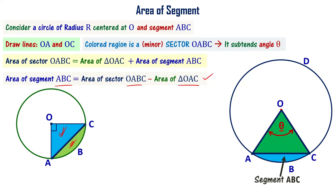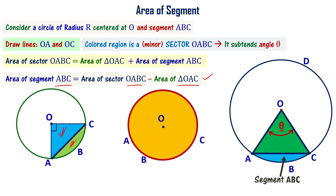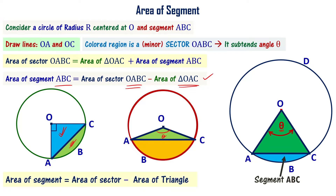Now let's consider the obtuse angle case. Connect OA and OC — the colored portion forms sector OABC where the angle theta is greater than 90 degrees, meaning it is an obtuse angle. In this scenario as well, the area of segment equals area of sector OABC minus area of triangle OAC. So the general formula is: area of segment = area of sector minus area of triangle.